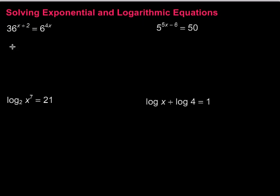Let's take a look at this first one. One of our methods that we can use is to write using the same base. If we can get both bases to be the same, we can set the exponent part equal. Well, 6 and 36 — 36 is 6 squared, so let me rewrite it as that.